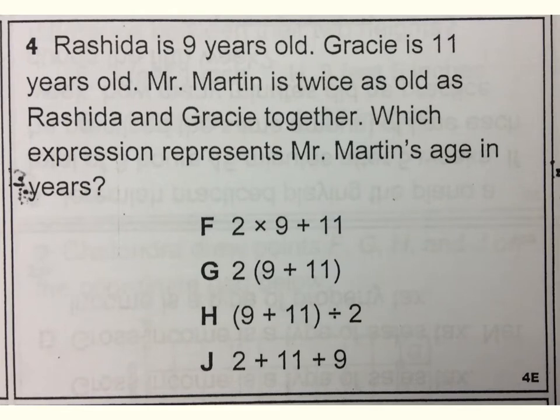Number four. Rashida is nine years old. Gracie is 11 years old. Mr. Martin is twice as old as Rashida and Gracie together. Which expression represents Mr. Martin's age in years?